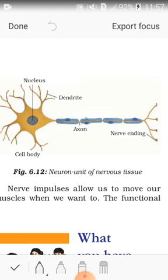A neuron consists of a cell body with the nucleus and cytoplasm from which long thin hair-like parts arise. Usually each neuron has a single long part or process called the axon and many short branched parts or processes called dendrites. An individual nerve cell may be up to a meter long. Many nerve fibers bound together by connective tissue make up a nerve.